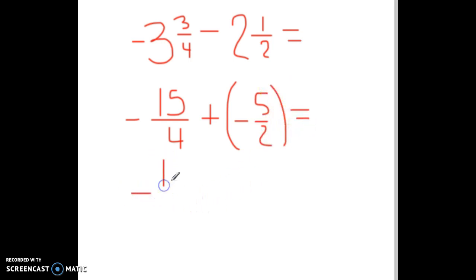Now we need to rewrite it because we have to have both of these with the same denominator. So when we do that, we can use the denominator four. So that's the first one they have in common. Two times two is four. Five times two is ten.